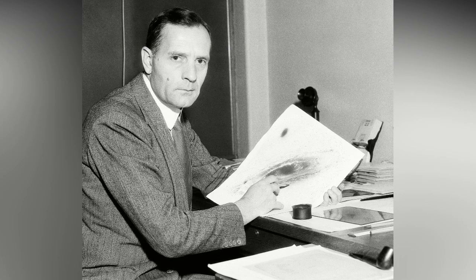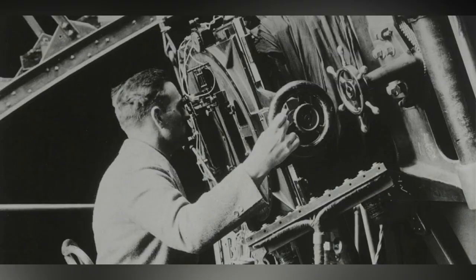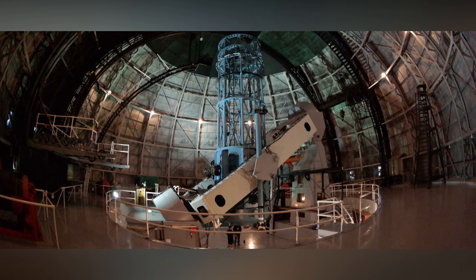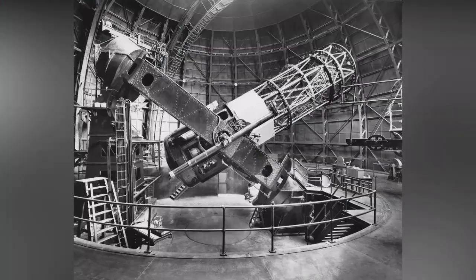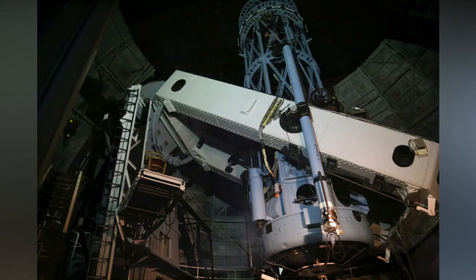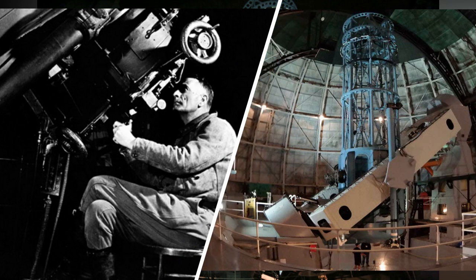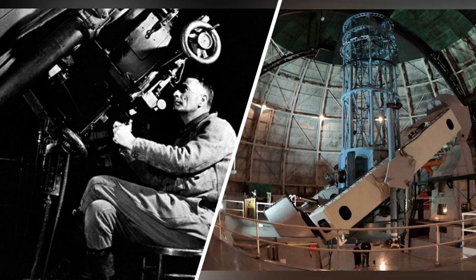Starting in 1919, Hubble had established himself as one of the most patient and accurate observers at Mount Wilson Observatory in California. Mount Wilson, in turn, had just established itself as the premier outpost for astronomical research. At that time, it had just completed the 100-inch Hooker Telescope. It was the perfect combination of the right observer in the right place at the right time.